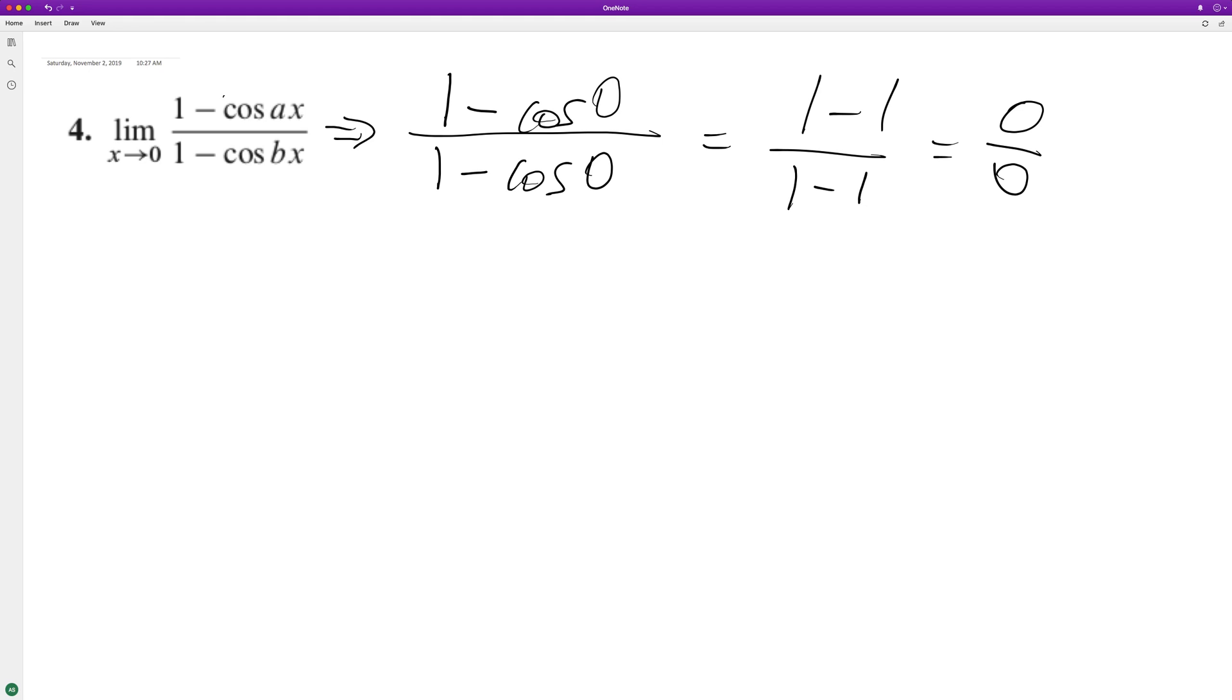All right, so let's take the derivative of the top and the bottom separately. When we do that, the derivative of 1 is 0, derivative of the cosine is negative sine, so we get positive a sine of ax over b sine of bx.